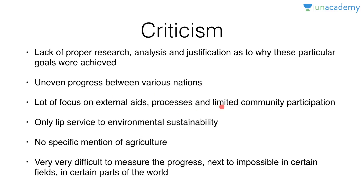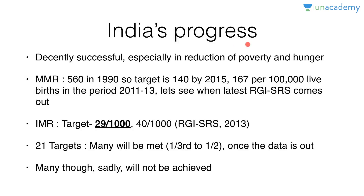Third criticism: there was a lot of focus on external aid and processes rather than local governance and community participation — there was very limited community participation. Then, only lip service was provided to environmental sustainability, and climate change and global warming became worse. There was no specific mention of agriculture despite most of the world's poor being directly or indirectly dependent on farming. Finally, it is very difficult — next to impossible in certain fields — to measure progress, for example in places like Mogadishu, the capital of Somalia, where it is very difficult to know whether people are alive, let alone hungry or going to school.